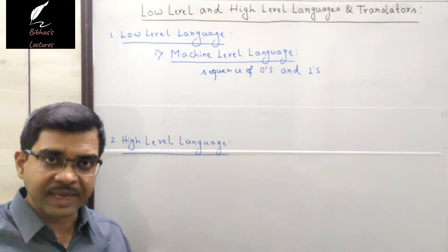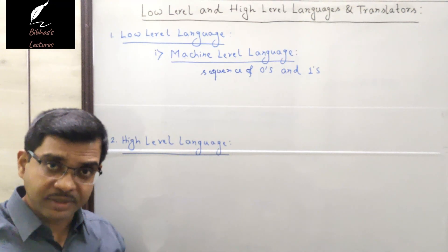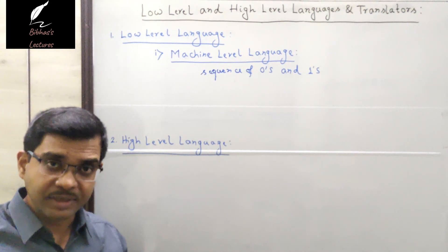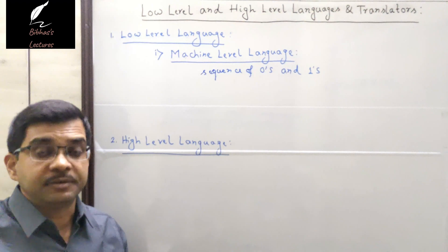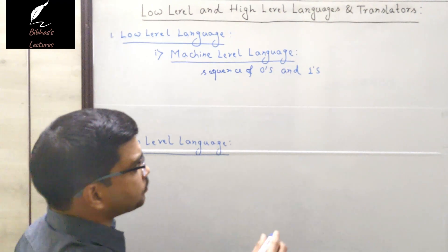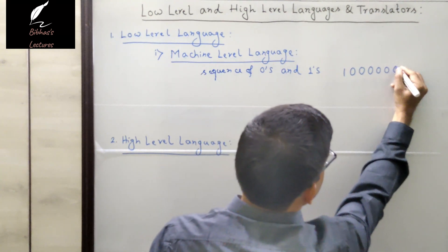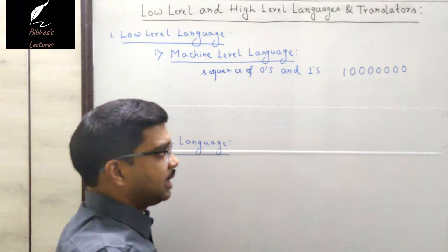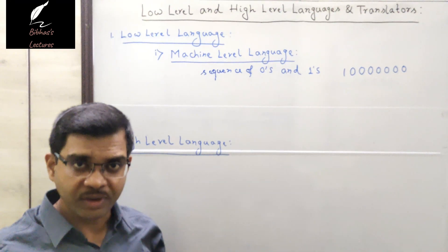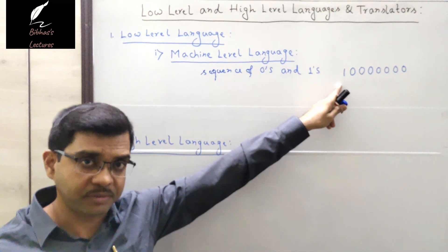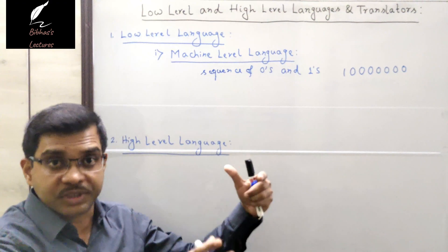Each and every machine has its own set of sequences, and this set of sequences is actually known as machine language. The program written using machine language is termed machine level programming. For example, 10000000 — that is one followed by seven zeros — is a machine instruction for addition in the 8085 microprocessor. This instruction is understandable by the machine, and each machine has its own set of instructions.